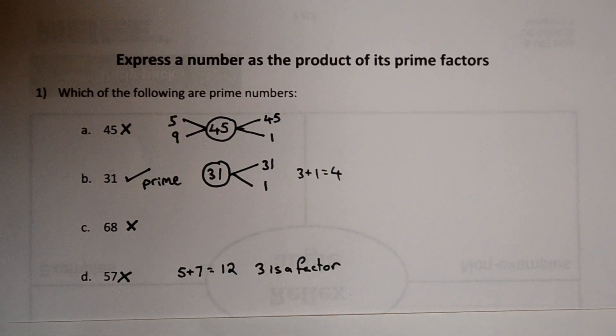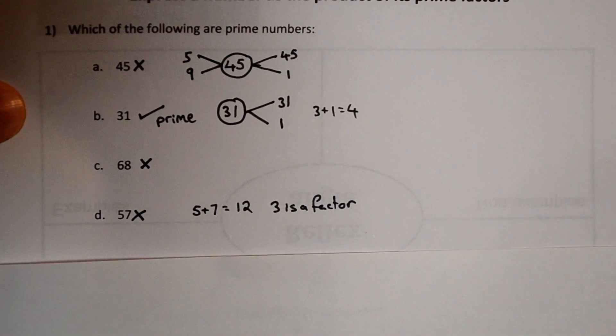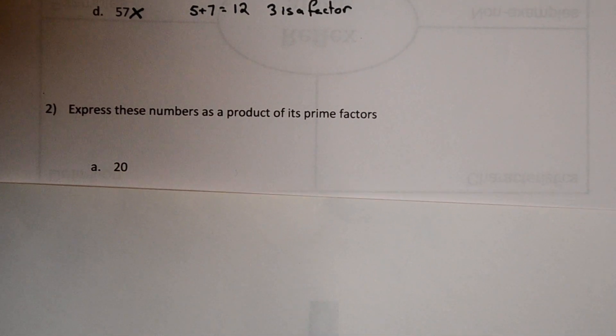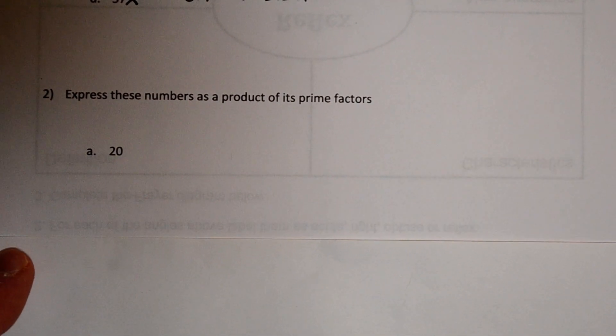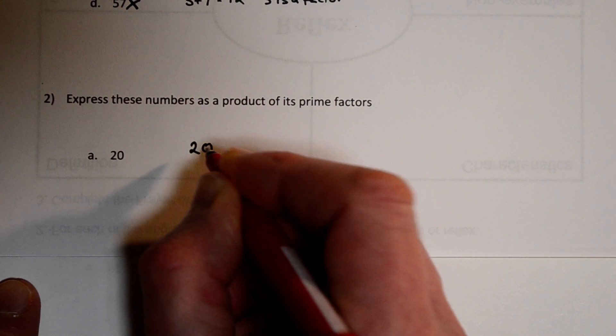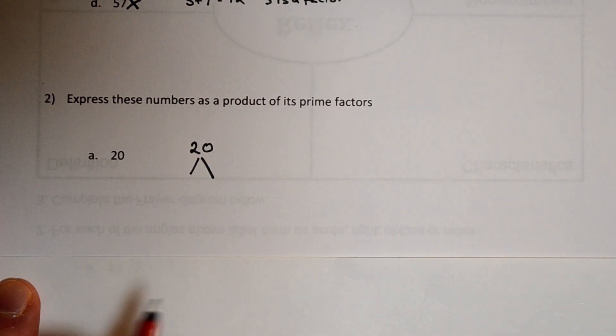If we're happy with finding prime numbers let's express a number as a product of its primes. So first of all 20. What's 20 as a product of its prime factors? To help us do this we're going to draw a tree diagram. We start with 20 then we divide it into a pair of factors that multiply to make it.